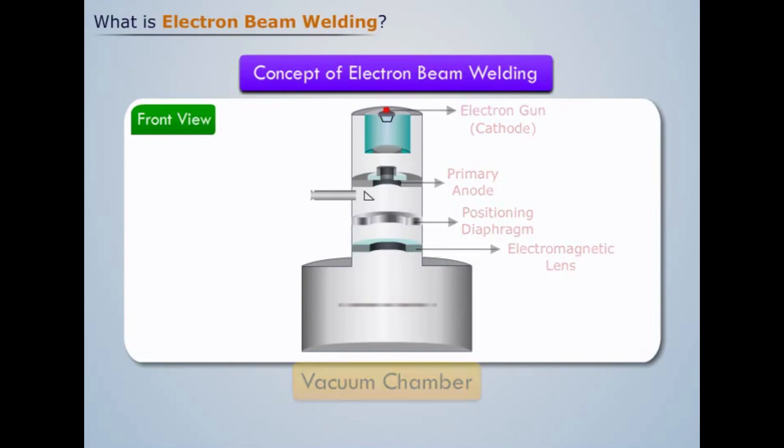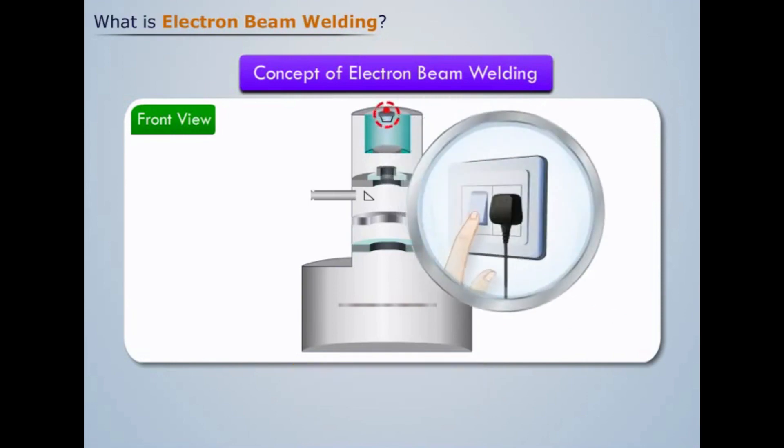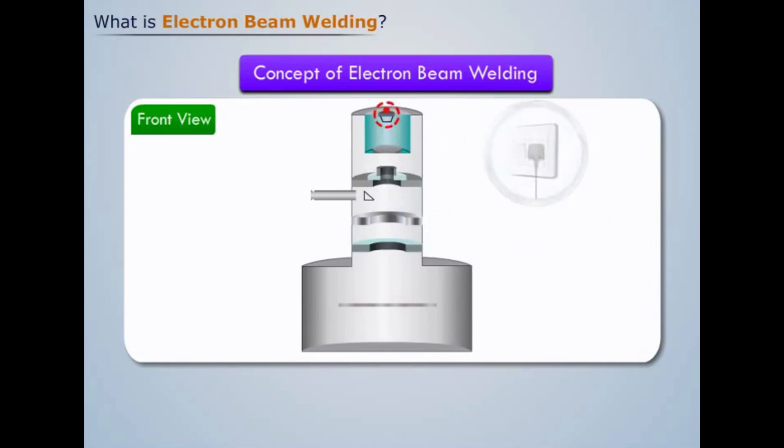Now let us switch on the power supply connected to the electron gun. We see that electrons move out of the gun and reach at the interface of the metal sheets.